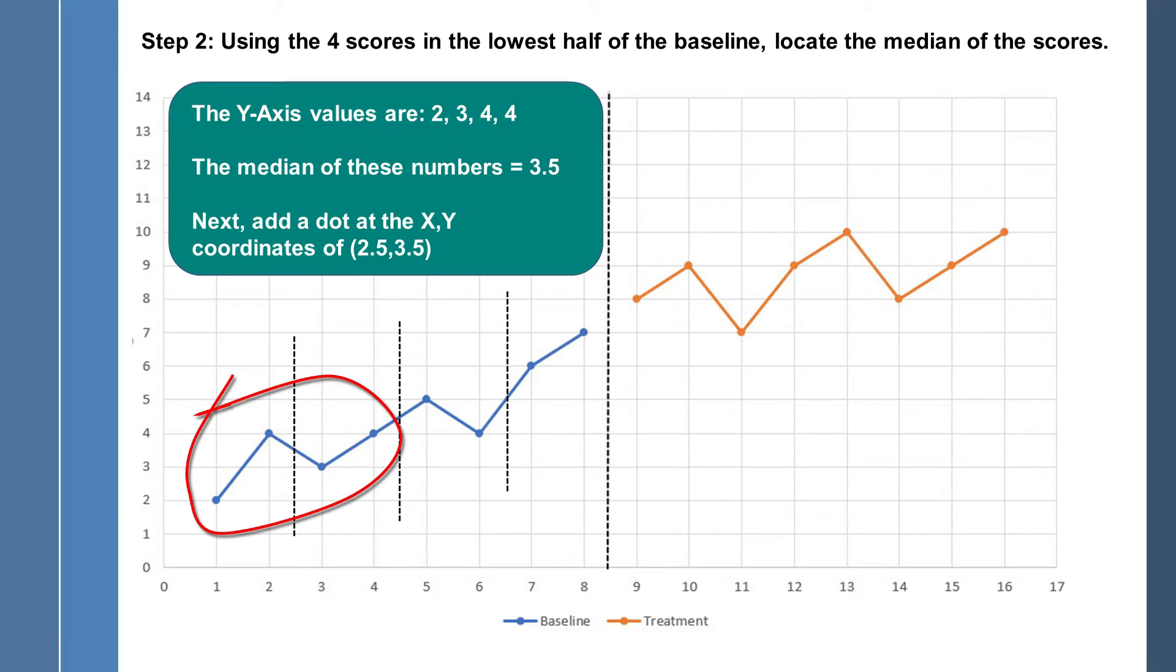So if you examine the values for these four data points, the first one has a score of two on the y-axis. Measurement number two has a score of four on the y-axis. Measurement number three has a score of three on the y-axis. And measurement number four has a score of four on the y-axis.